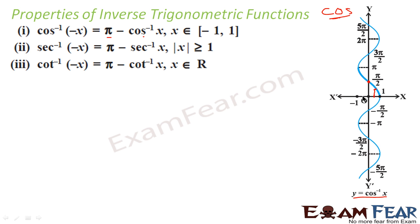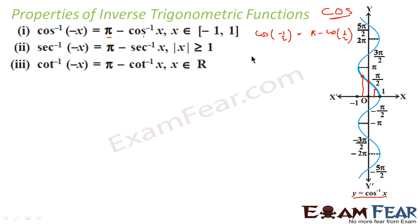For example, cos⁻¹(1/2) = π/3 and cos⁻¹(−1/2) = 2π/3, which is π − π/3. Since the center of the principal interval is π/2 rather than 0, instead of getting a simple minus, you get π minus the value. So for the cos family, since the center is π/2, it is π − cos⁻¹(x) rather than −cos⁻¹(x).